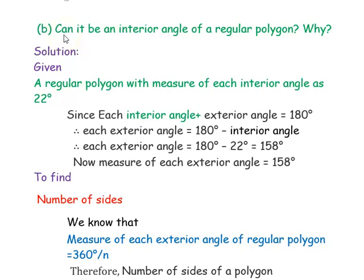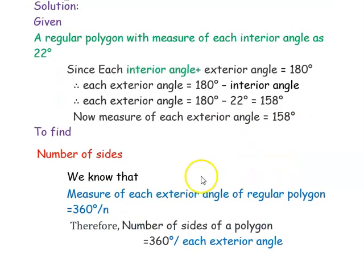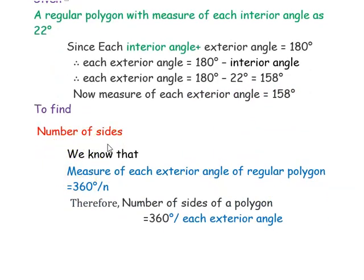Next is the second part of the question: can 22 degrees be an interior angle of a regular polygon? It is given that each interior angle of the regular polygon is 22 degrees. Since each interior angle plus exterior angle equals 180 degrees, the exterior angle equals 180 degrees minus 22 degrees, which gives 158 degrees. That is each exterior angle.